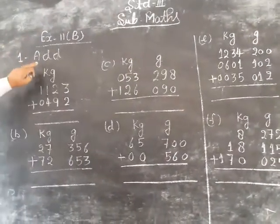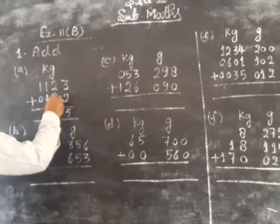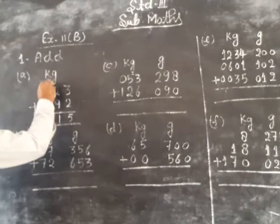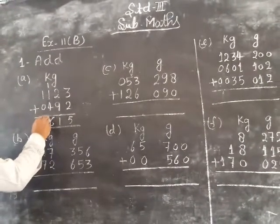Question number 1, add. Kilogram gram. This is the idea of the add. 3 plus 2, 5. 9 plus 2, 11. Carry 1. 4, 1, 5, 1, 6. 1 plus 0, 1.